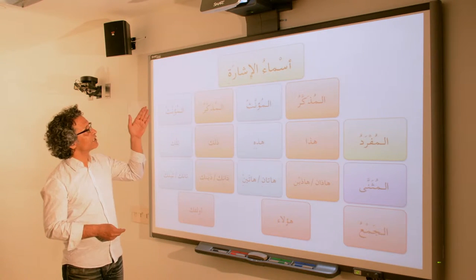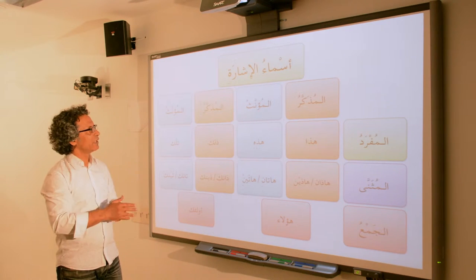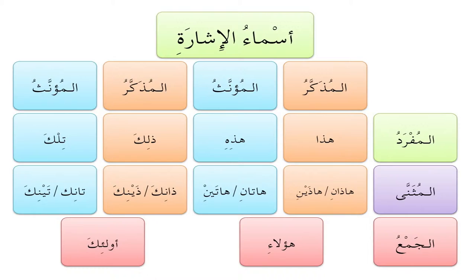Now let's take a look at أسماء الإشارة للبعيد — for things that are further away, that is in the realm of 'that'. So: ذلك, تلك — that masculine and feminine. ذانيك, ذينيك and تانيك, تينيك — this is the masculine and feminine for 'those two'. Once again we see the variation in case. The plural is أولائك.